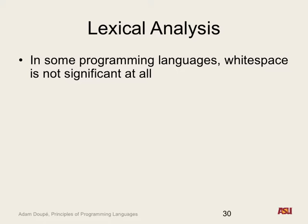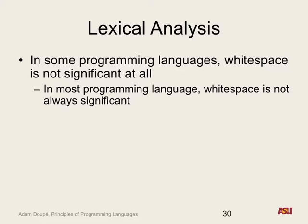Are new lines significant in a language like C or Java? No. Right? You can write your program all on one line. You don't have to use any returns. Those are just better for you, the programmer, and for future you to try and maintain that program. But what about a language like Python? Because Python, not only are new lines important, but tabs or spaces - the indentation is also important. So in most programming languages, white space is sometimes significant, but also sometimes not.